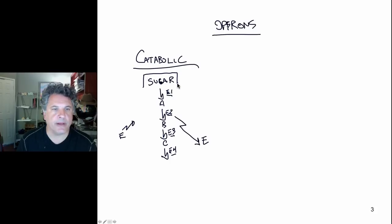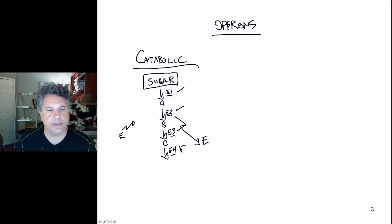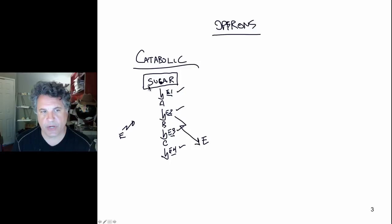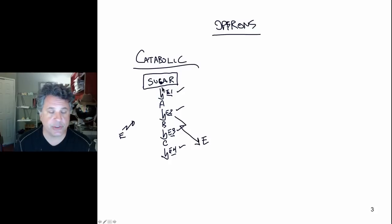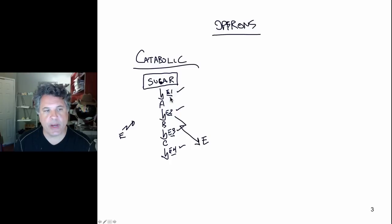Energetically speaking, if you have a particular sugar — a foodstuff — that is plentiful, it makes sense to manufacture the enzymes and proteins used in the breakdown of that sugar to provide energy for the cell. However, if the sugar is at low concentrations or absent from the bacterial environment, it would be wasteful to invest energy in producing proteins required for energy derivation from that sugar. Bacteria therefore have an interest in regulating genes that encode enzymes involved in catabolism of particular foodstuffs — turning them on when the sugar is present and off when it is not.